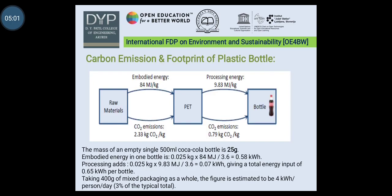Now, carbon emission and footprint of plastic bottles. First, raw materials: when PET is manufactured, the raw material embodied energy is 84 MJ per kg and its CO2 emission is 2.33 kg CO2 per kg. After PET, processing energy is 9.83 MJ per kg and CO2 emission is 0.79 kg CO2 per kg. I have considered a Coca-Cola bottle for this example. The mass of an empty single 500 ml Coca-Cola bottle is 25 g. Embodied energy in one bottle is 0.58 kWh, processing adds 0.07 kWh, giving a total energy input of 0.65 kWh per bottle.